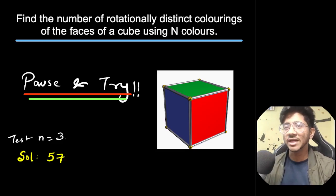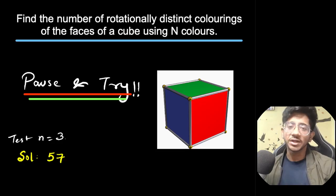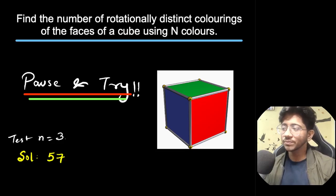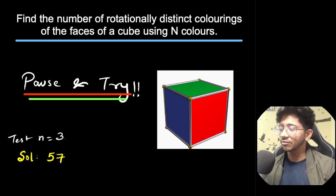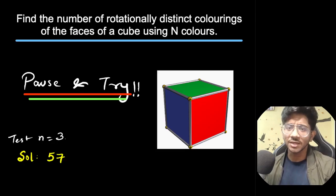We need to find the number of ways to color the cube with n different colors, considering 3D rotations around different axes. We've talked about finding axes and fixed elements in previous videos. In a 3D cube it's more difficult. You can pause and try — for N=3, the answer is 57 colorings. Please like the video and subscribe to the channel.